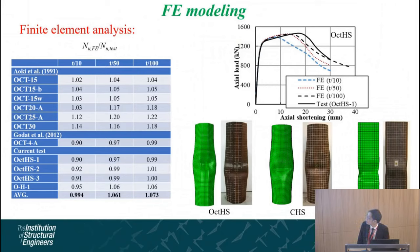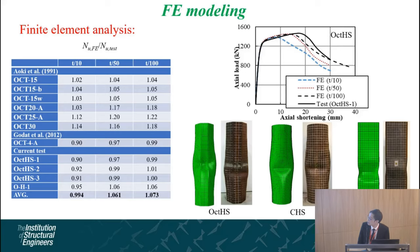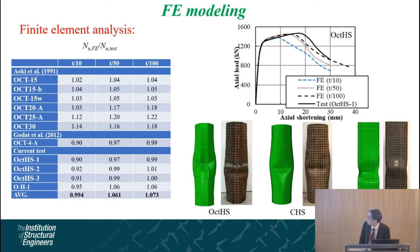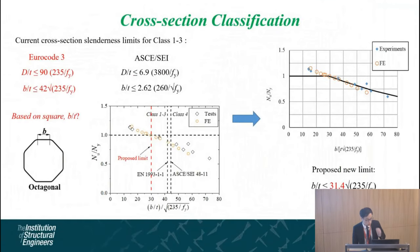The finite element results were validated against existing experimental data for octagonal hollow steel tubes. We found that the prediction of the ultimate load capacity of the octagonal section from the finite element analysis is very good, and the failure mode can also be captured by this finite element analysis.